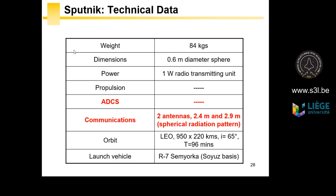Let's look at the technical data of Sputnik. It is a small sphere of about 0.6 meters in diameter, weighing no more than 84 kg. The power of the signal emitted is only 1 W — the same as your mobile phone. Sputnik didn't need propulsion; once it was in orbit, it was not able to change its orbit. ADCS — Attitude Determination and Control System — is different: propulsion is for changing your orbit, while ADCS is to change your attitude in orbit, for example to rotate or stabilize the satellite to point its antenna toward the ground.